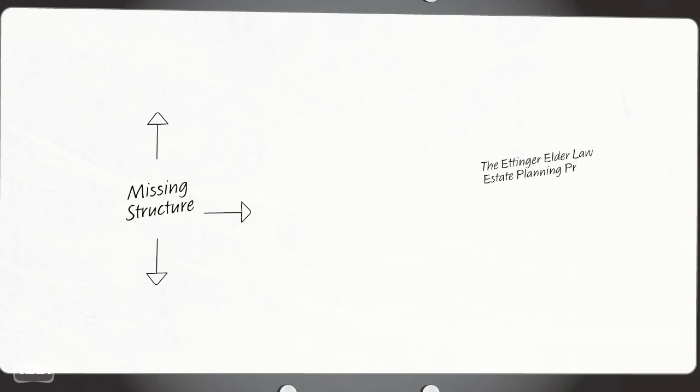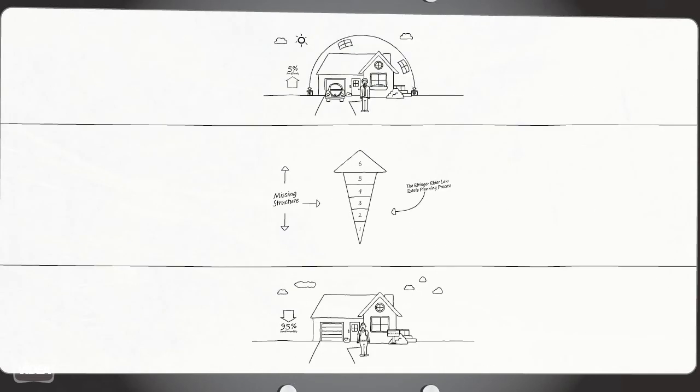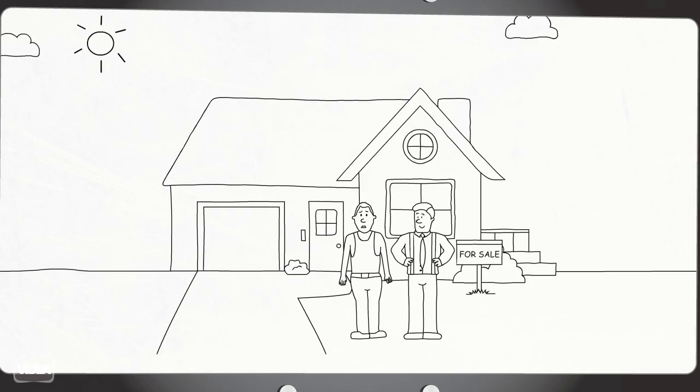The Ettinger Elder Law Estate Planning Process is a proprietary six-step program that uses the power of trusts combined with computerized tracking to protect your assets, combining elder law and estate planning.